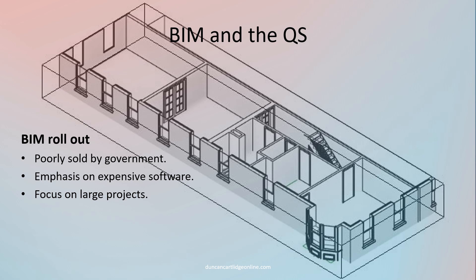What sort of relationship does the construction industry currently have with BIM? For sure, the rollout of BIM was very poorly handled by the Cabinet Office. Construction has always been notoriously difficult to pick up new ideas, and BIM was no different. The mandate that BIM Level 2 was to be used for all centrally procured projects from 2016 was either ignored or circumvented. The main emphasis was on expensive software and upskilling, whereas, as has been repeated many times, BIM equals collaboration.